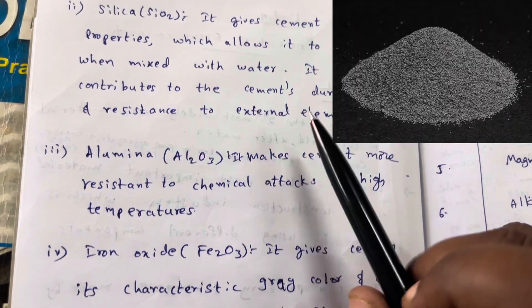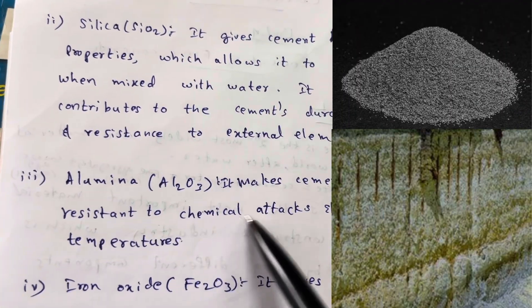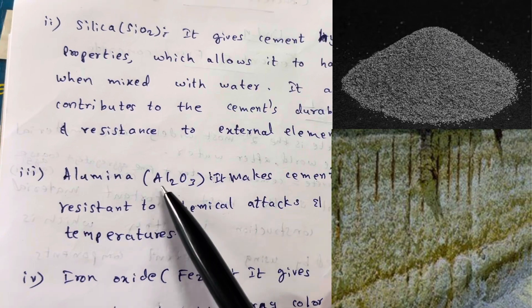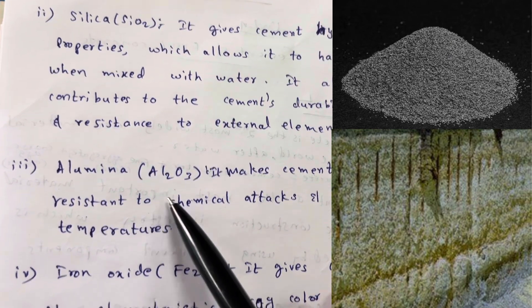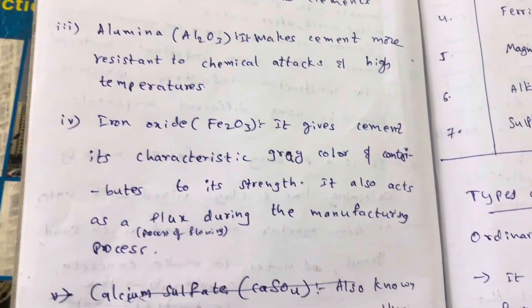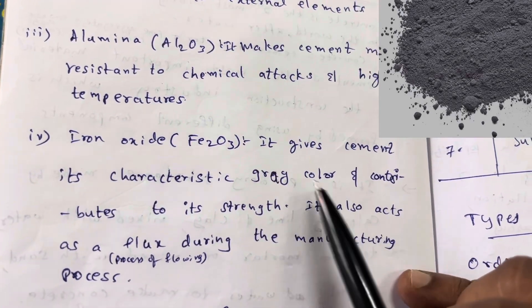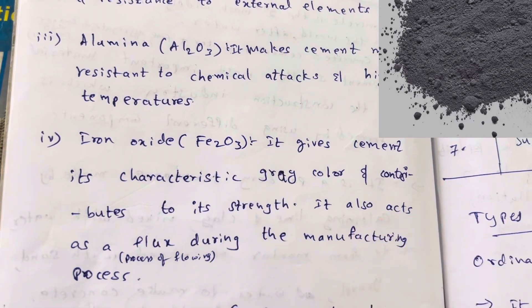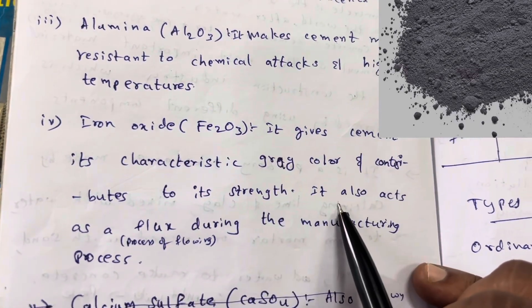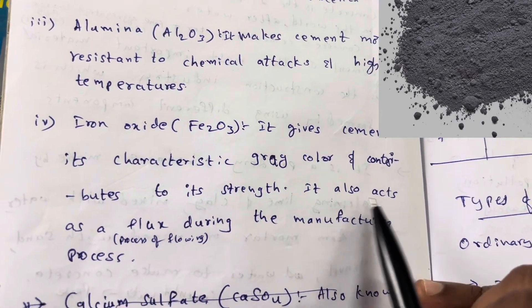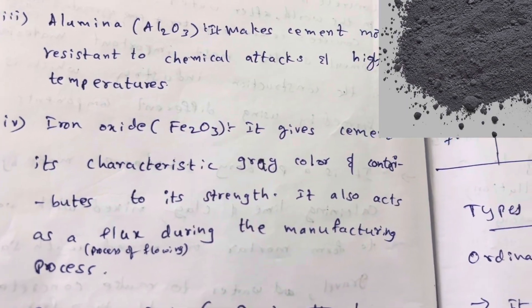Alumina Al2O3 makes cement more resistant to chemical attacks and high temperatures. Iron oxide Fe2O3 gives cement its characteristic gray color and contributes to its strength. It also acts as a flux during the manufacturing process.